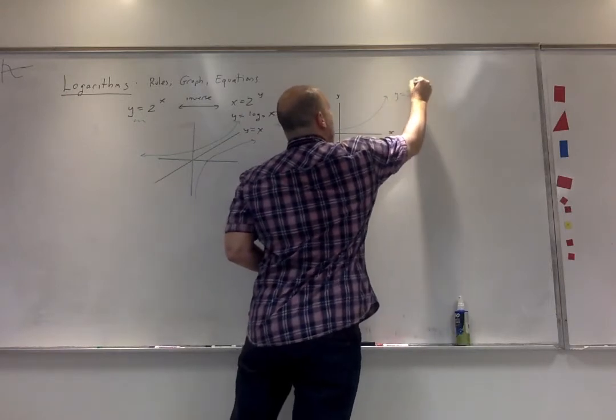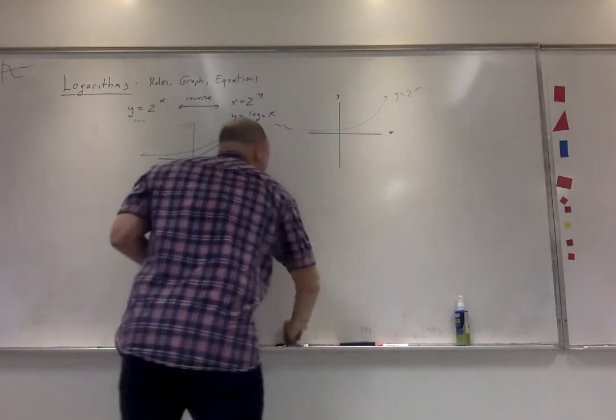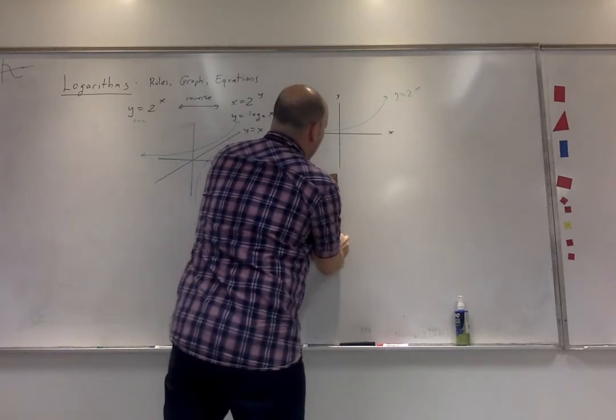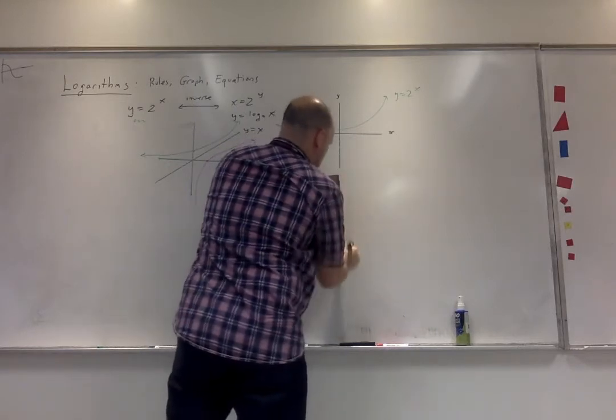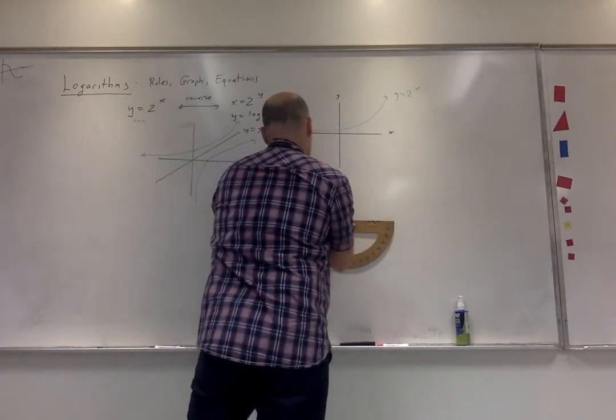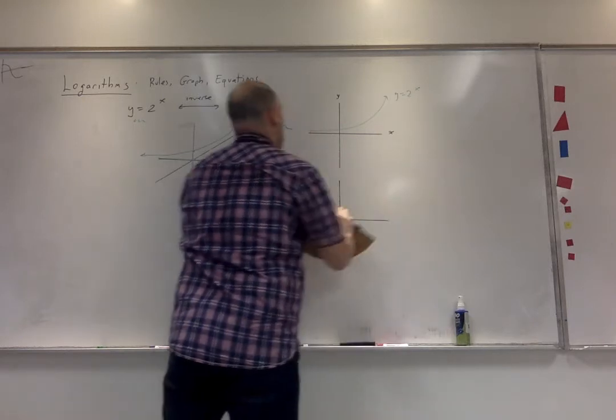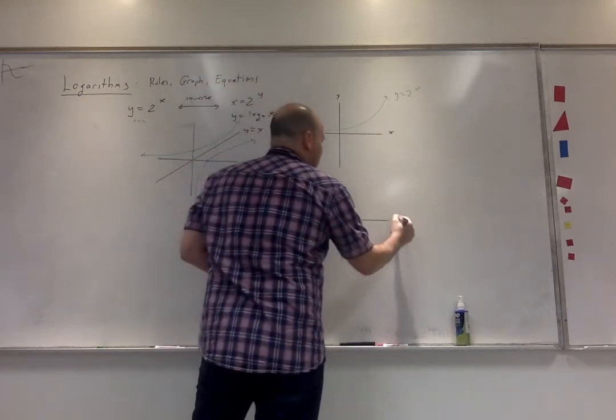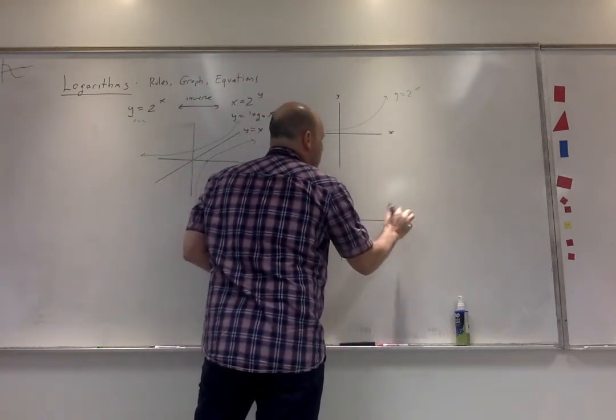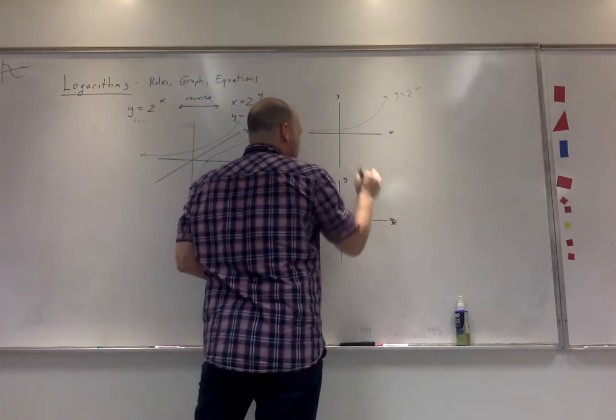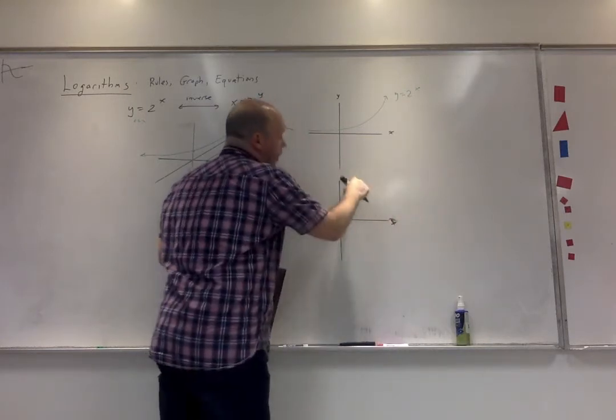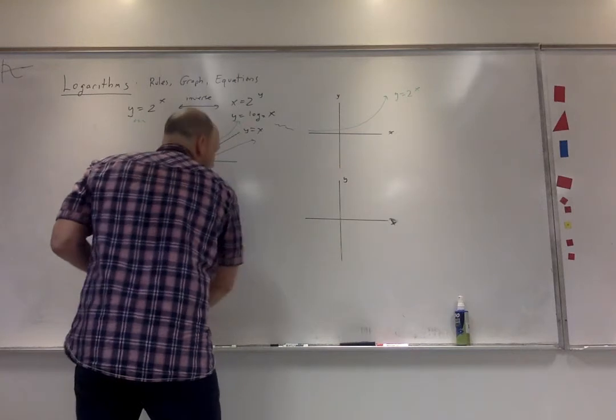y equals 2 to the x. And then the inverse we draw it on a separate graph.